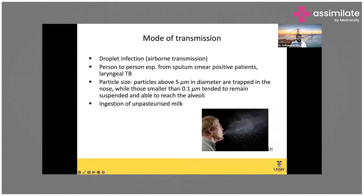Droplet infection is the usual mode of transmission, and person-to-person transmission occurs from sputum smear-positive patients and laryngeal TB. Particles less than 0.1 micrometer in size tend to remain suspended in the air and are able to reach the alveoli.